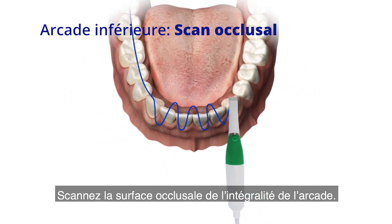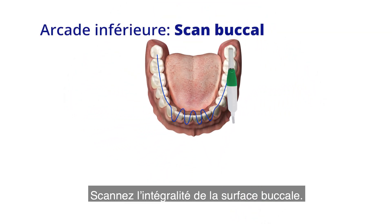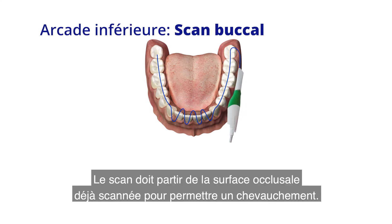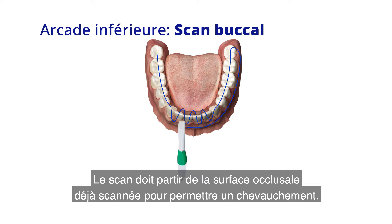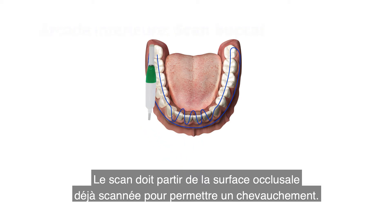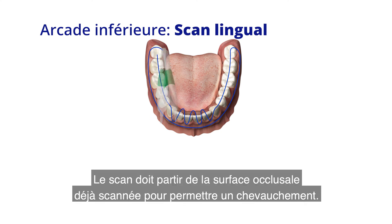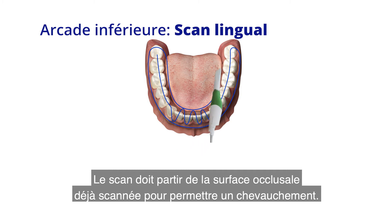Scan the occlusal of the entire arch. Scan all of the buccal. The scan should continue from the occlusal surface already scanned and overlap with it. Scan all of the lingual. The scan should continue from the occlusal surface already scanned and overlap with it.